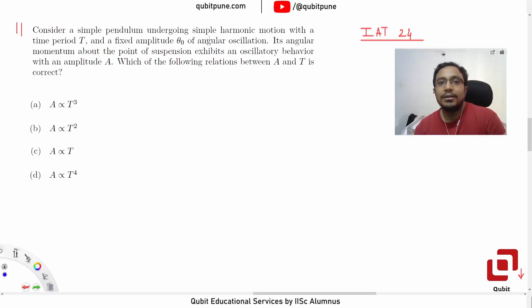Consider a simple pendulum undergoing simple harmonic motion with a time period T and a fixed amplitude theta naught of angular oscillation. Its angular momentum above the point of suspension exhibits an oscillatory behavior with an amplitude A. Which of the following relations between A and T is correct? A is proportional to T to the power 3, 2, 1, or 4.